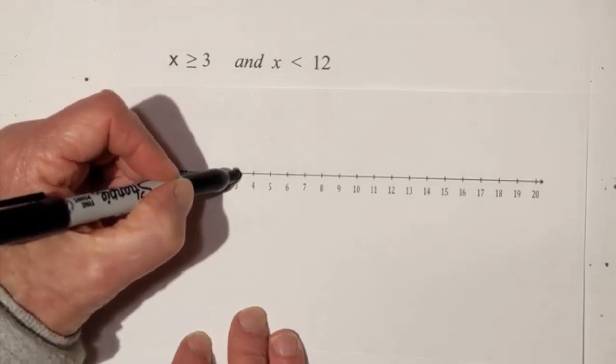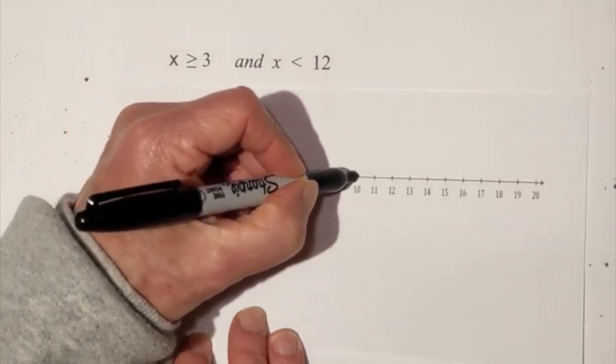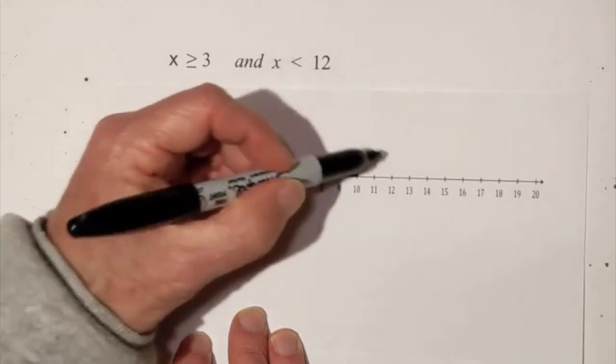Okay and then I know I'm going to go up towards 12 and at the same time it has to be less than 12.